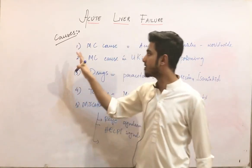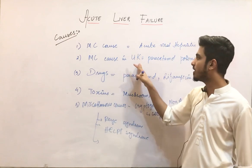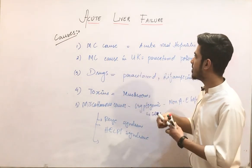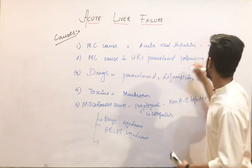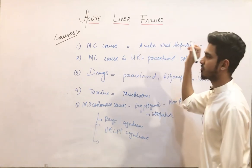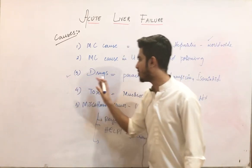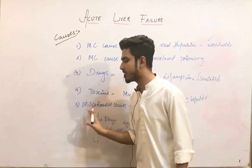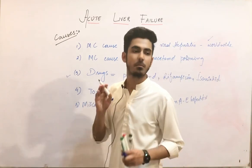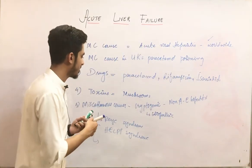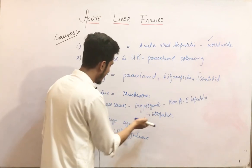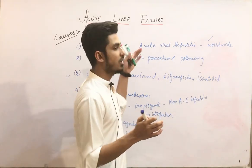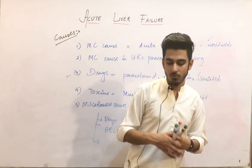Other miscellaneous causes include Reye syndrome and HELLP syndrome, which we have studied in gynecology. So these are the miscellaneous causes of acute liver failure. To summarize: the most common worldwide cause is acute viral hepatitis; in the UK, it is paracetamol poisoning. Drugs, toxins, and miscellaneous causes also apply.